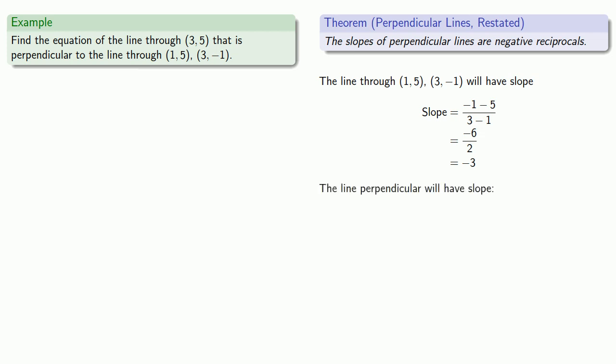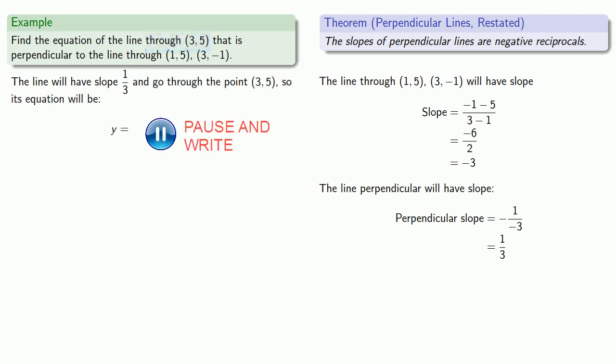The line perpendicular will have a slope that is the negative reciprocal. So that perpendicular slope will be... So I know the line will have slope 1/3 and go through the point (3, 5). So its equation will be...